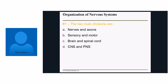One good thing about recordings is you can definitely pause, play, skip ahead, skip back — however you want to watch this that is most useful for you. So to start off, the two main divisions of our nervous system are: nerves/axons, sensory and motor, brain and spinal cord, or CNS and PNS.